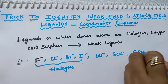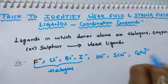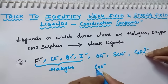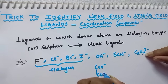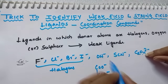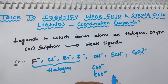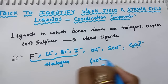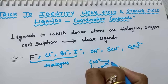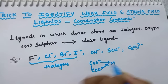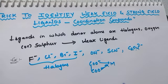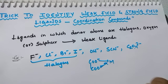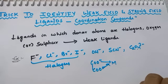Next, oxalate ion. If you see the oxalate ion structure — COO⁻ COO⁻ — it is a bidentate ligand. Oxygen is the donor; these two oxygens donate to the metal. So oxygen is the donor and oxalate is also a weak field ligand.